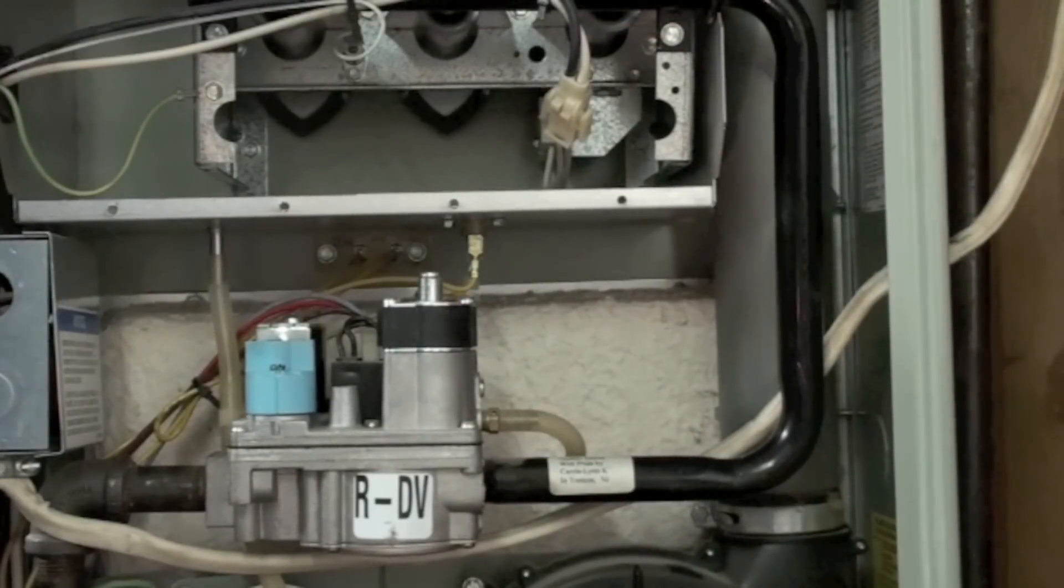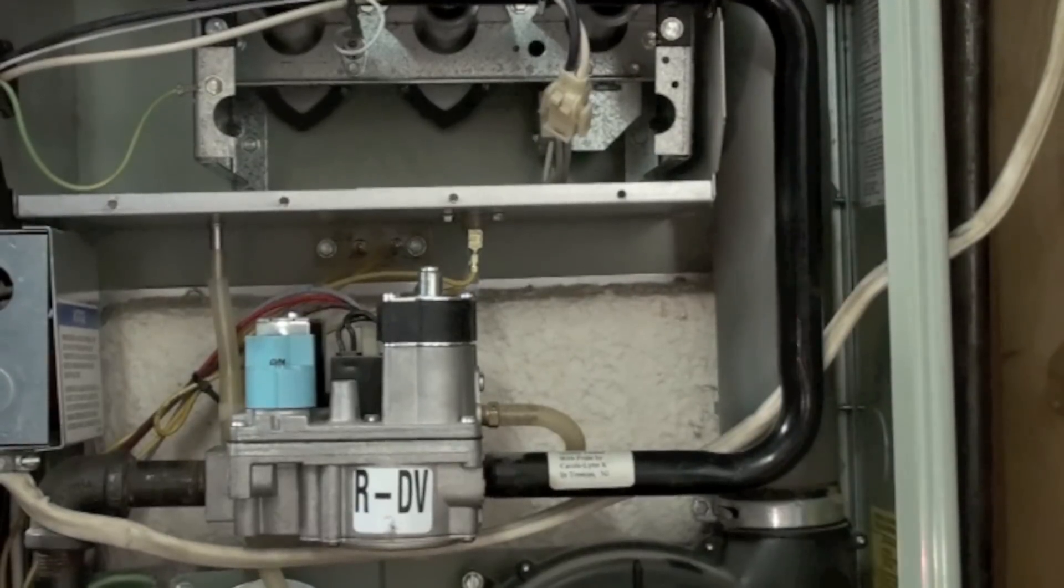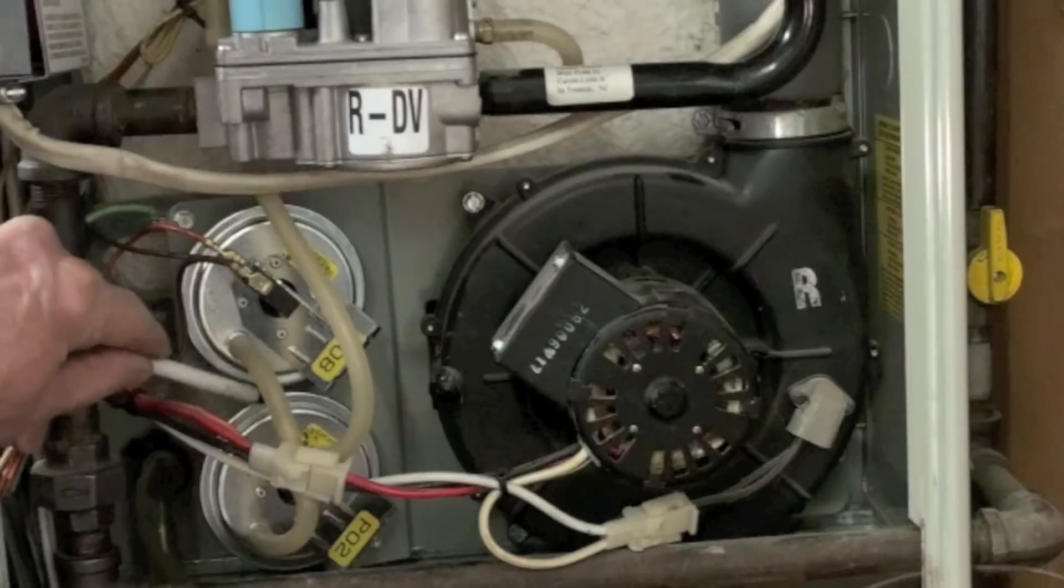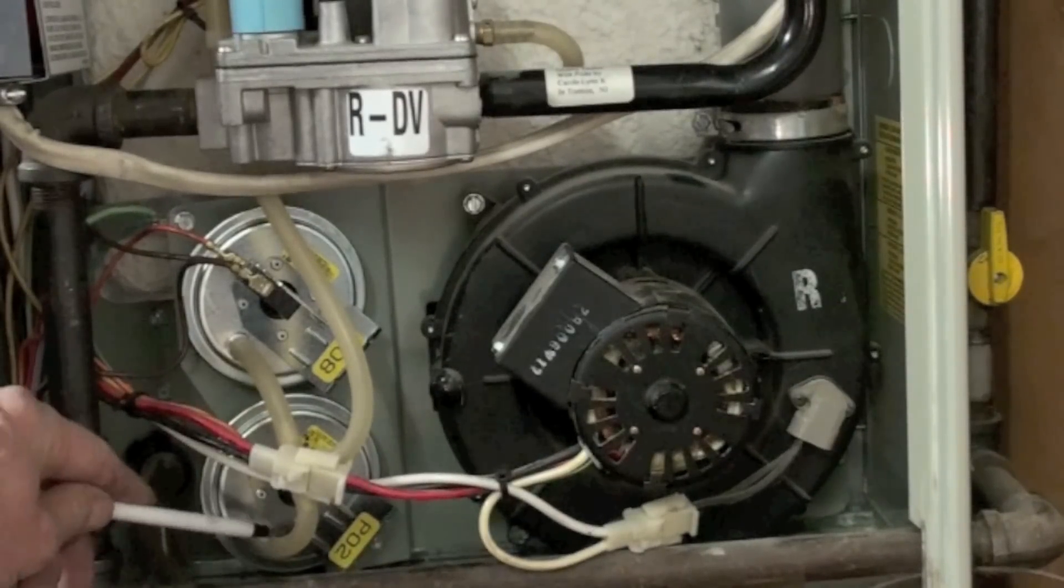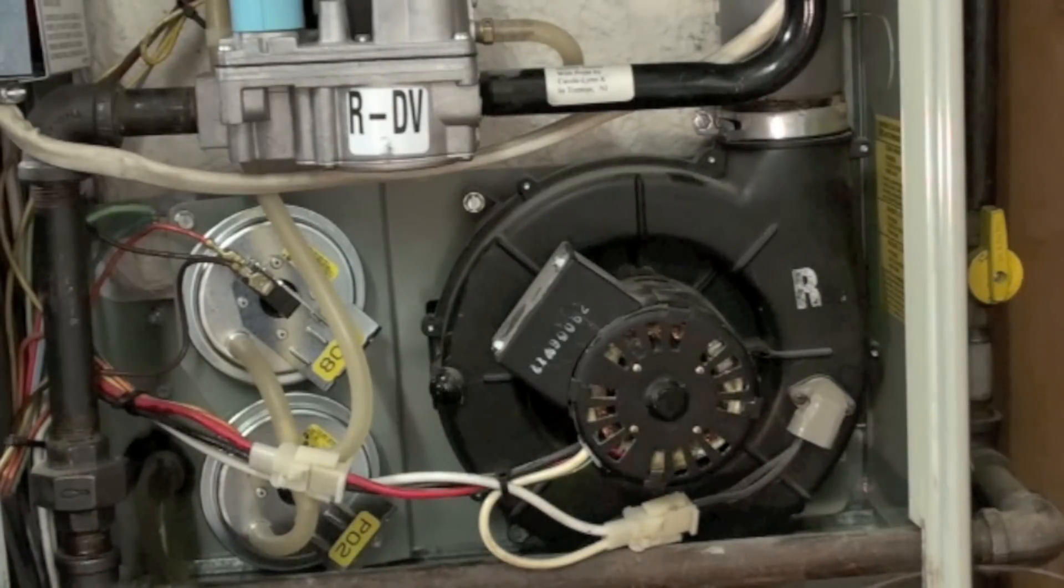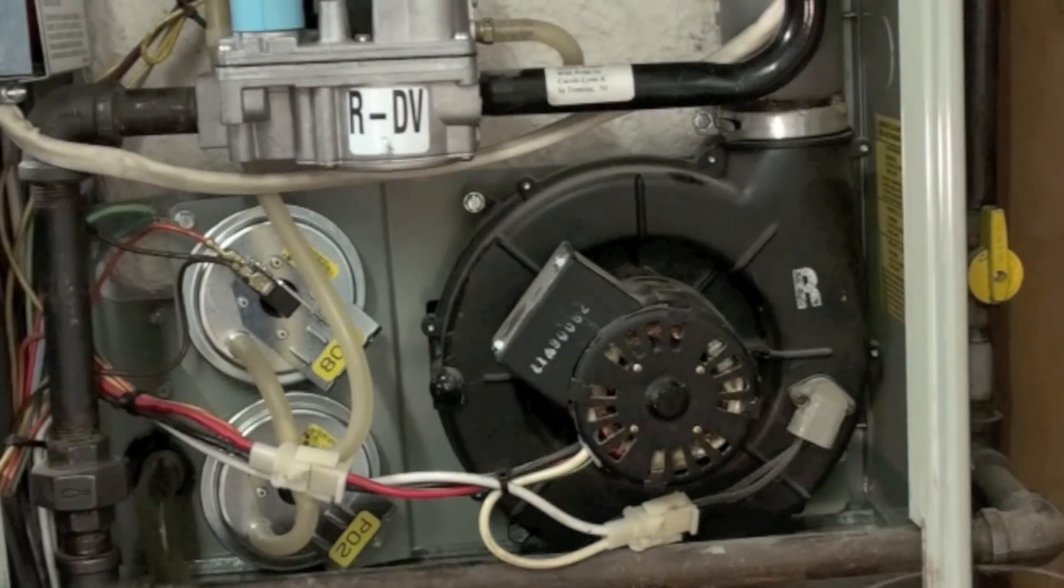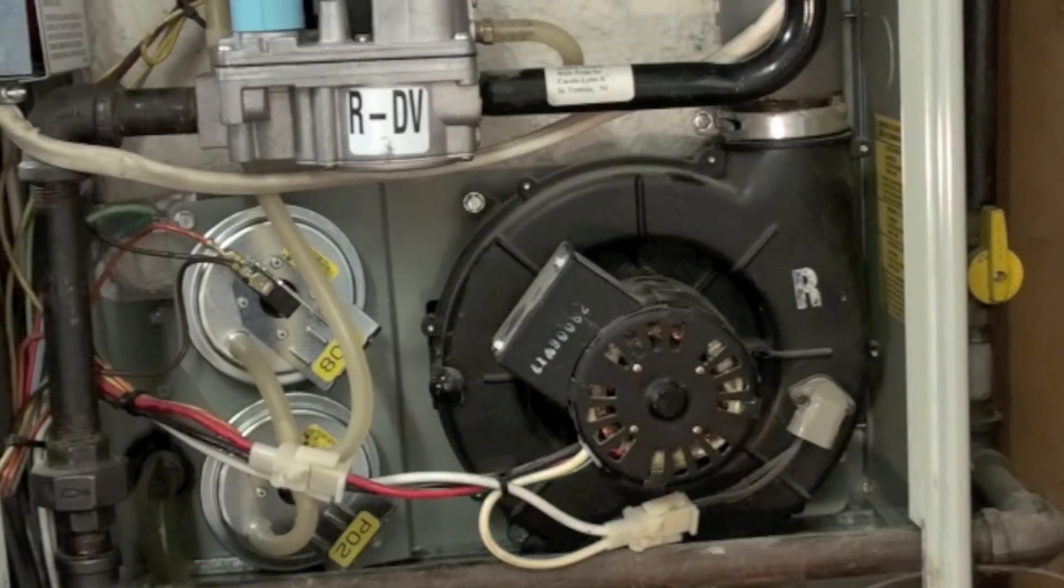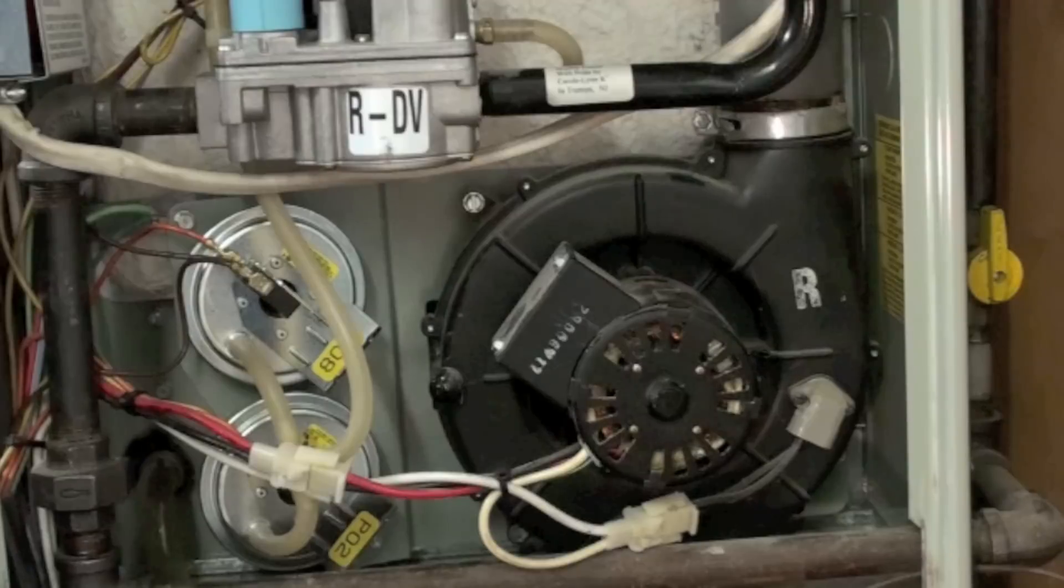Okay, things other than flame failure problems that could cause short cycling. Pressure switches, maybe this tubing here is looped down and got water in it or actually the pressure switch itself has got water and that'll cause it. That's usually a low ambient condition like it's very cold in the house. That might happen then.